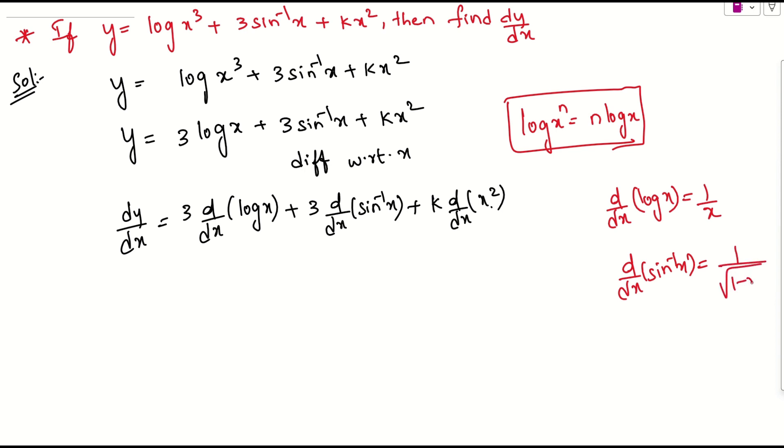And what about this one? d by dx of x squared. We will apply the formula n times x to the power of n minus 1. So 2 times x to the power of 2 minus 1, which is 2 times x to the power of 1. So let us substitute here.